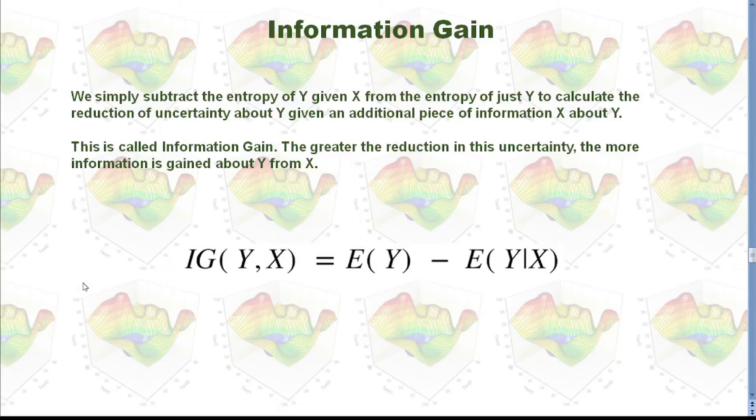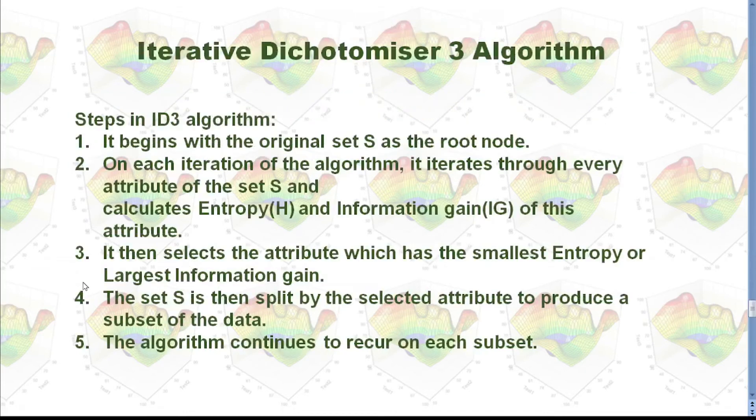In our case, when we build a decision tree, we want to pick up the feature which will give us the greatest reduction of uncertainty. That is with the largest information gain. Now, let's use this ID3 algorithm to build our decision tree in Python.